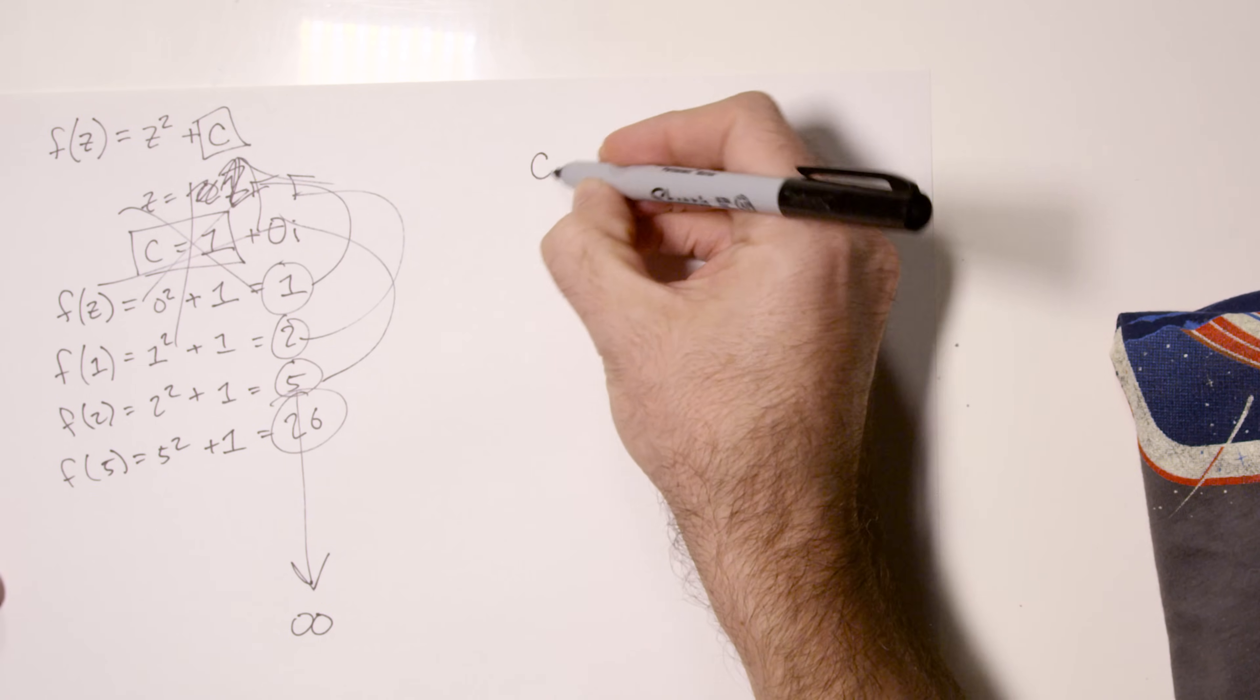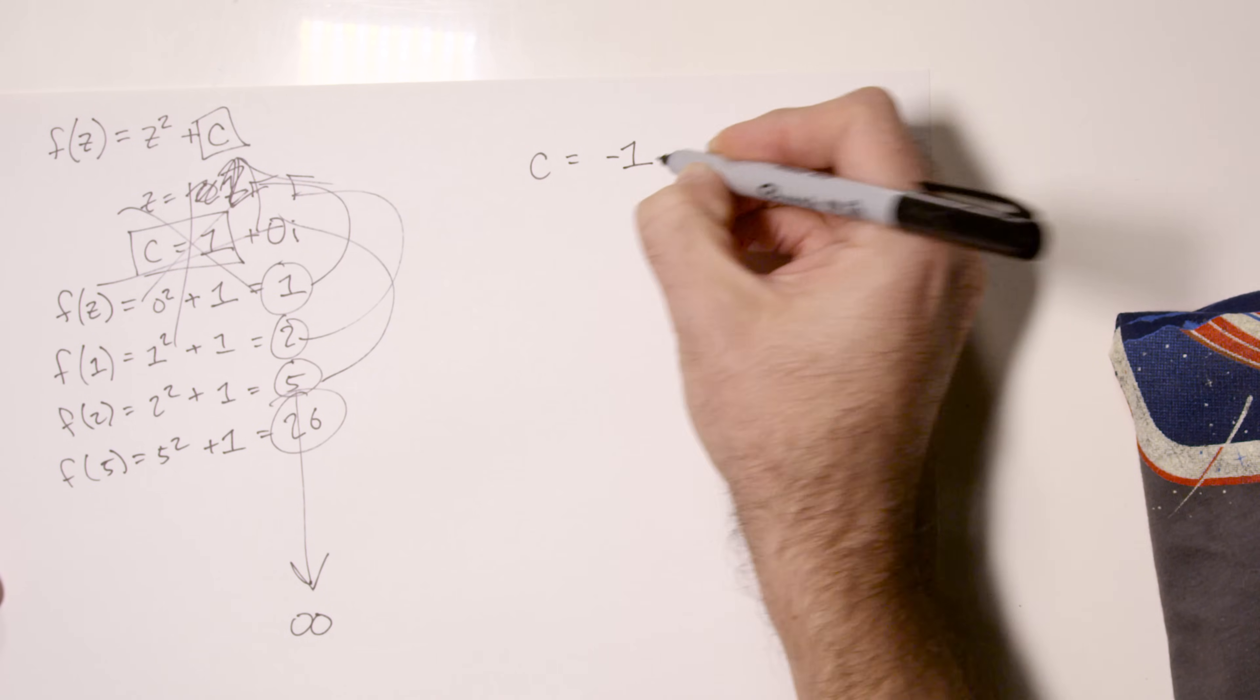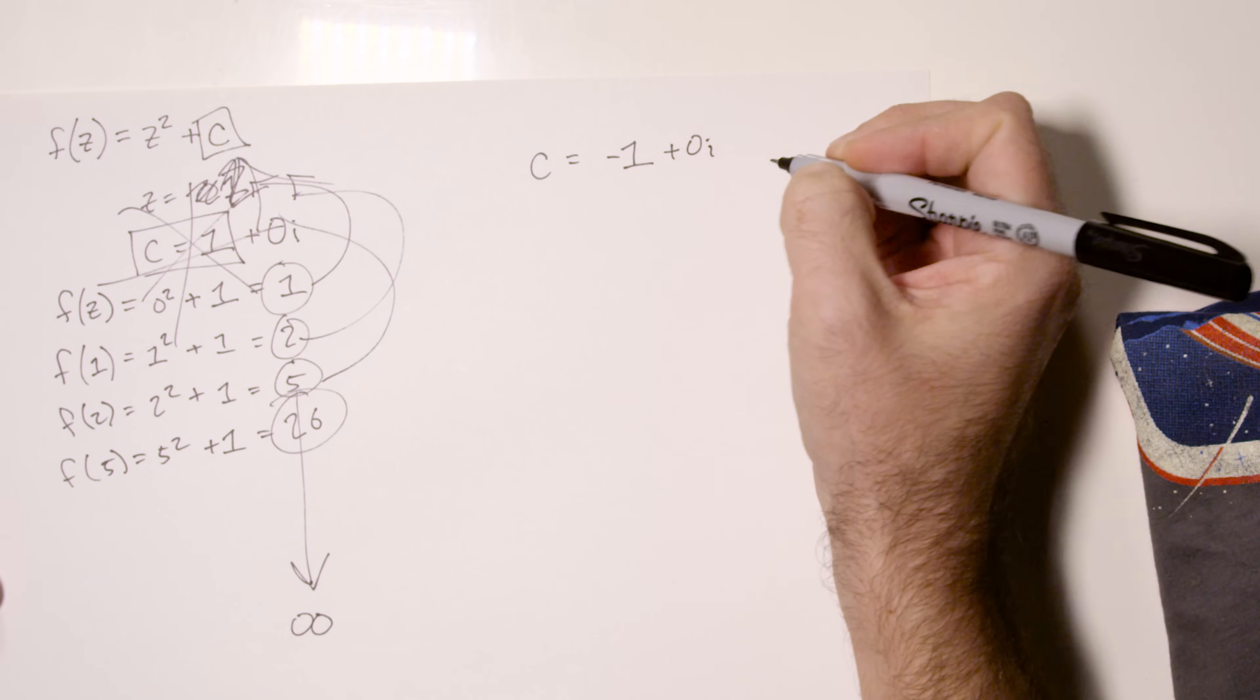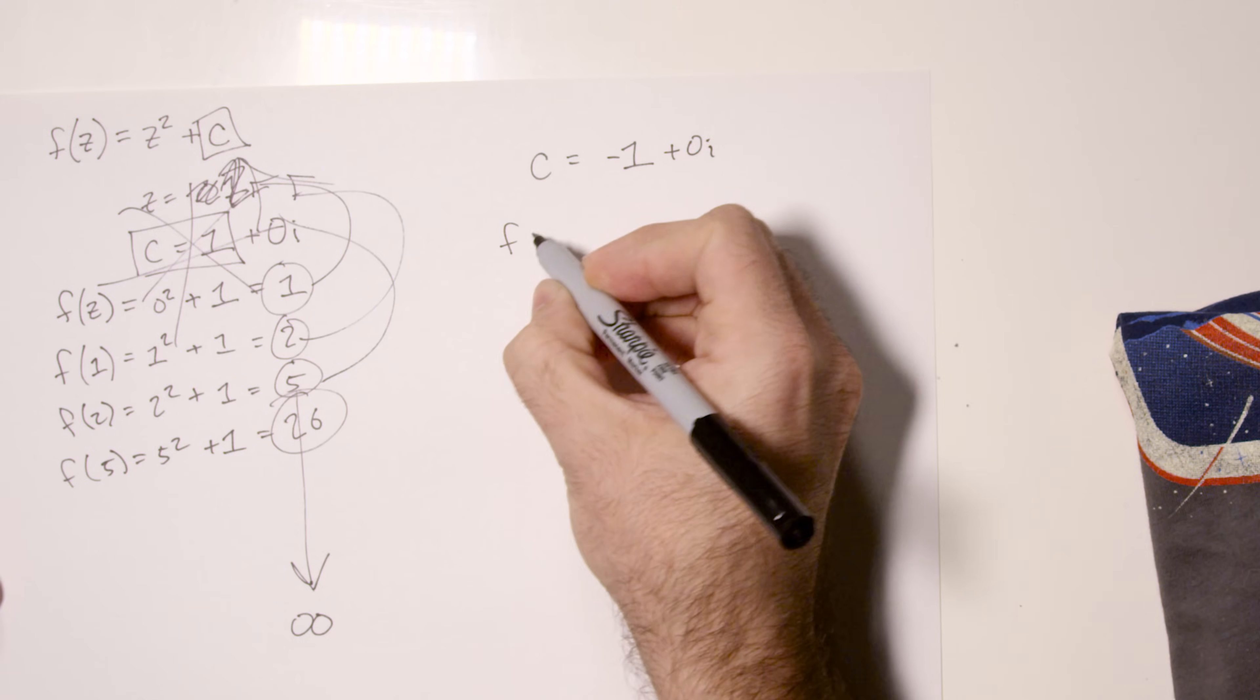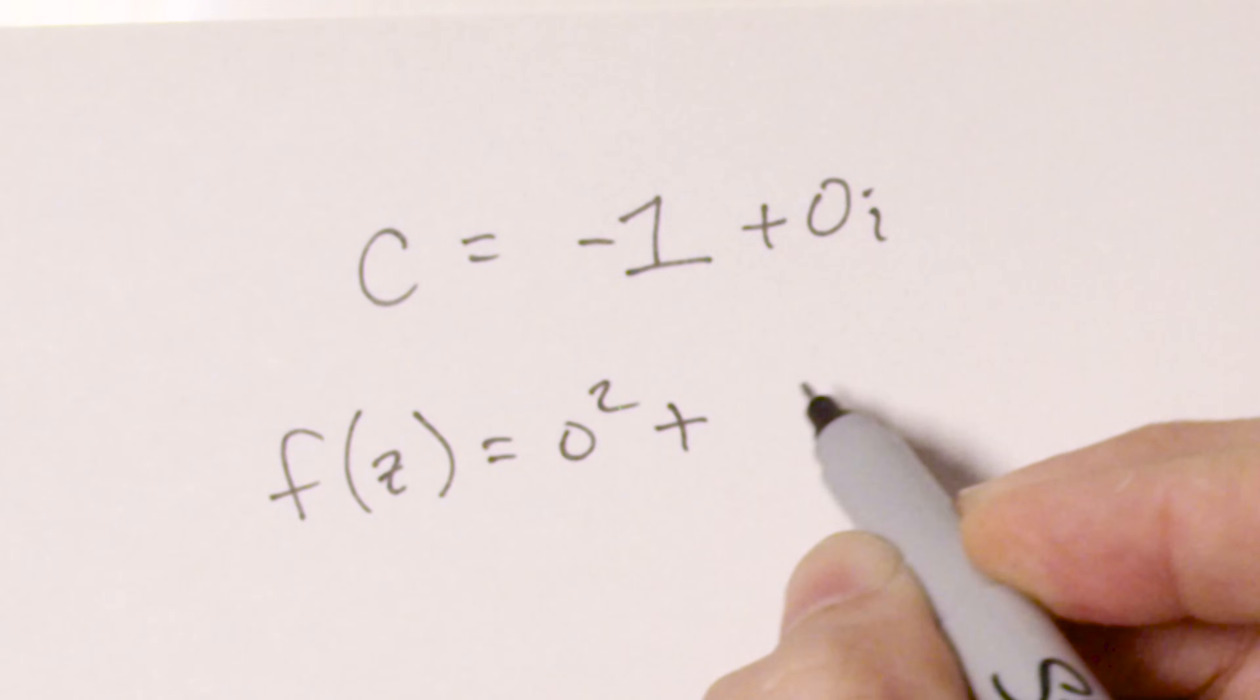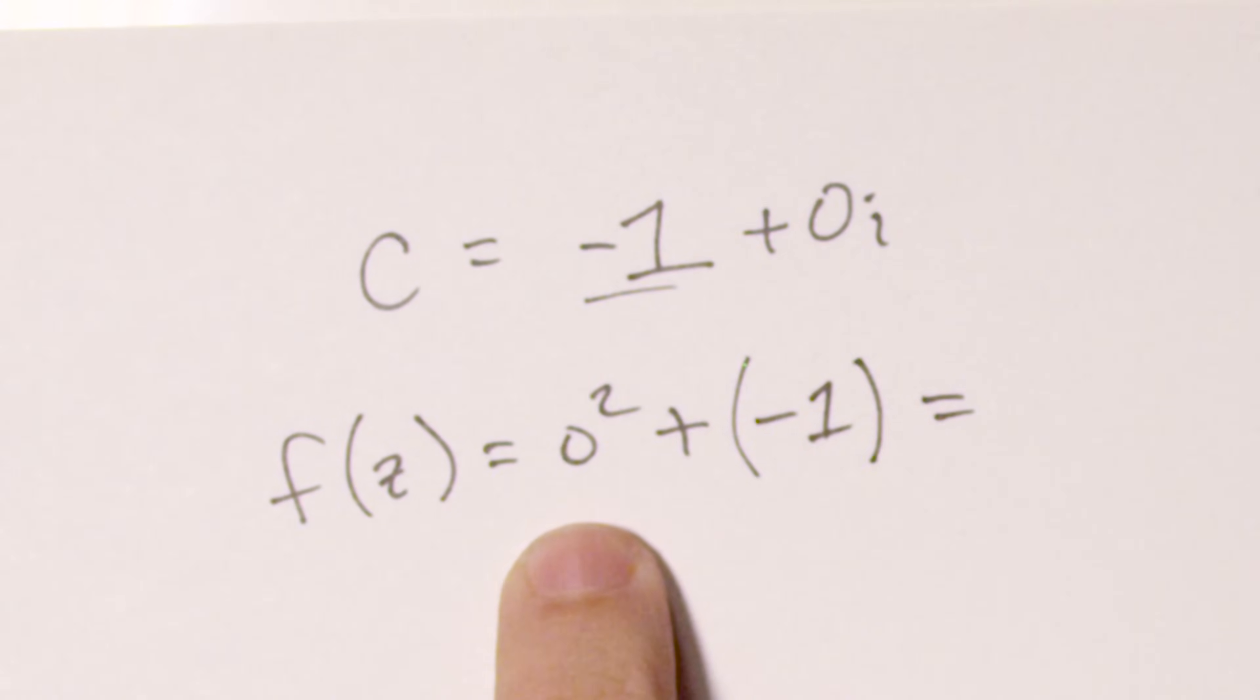But now let's try this for the complex number negative one, which can also be thought of as negative one plus zero i. Now, we begin with f of z, where z equals zero. Zero squared. And then we add c, which is negative one. So we're adding negative one. What does this give us? Well, zero squared is zero, and then we're adding a negative one, which means we're subtracting one, so we get a negative one.